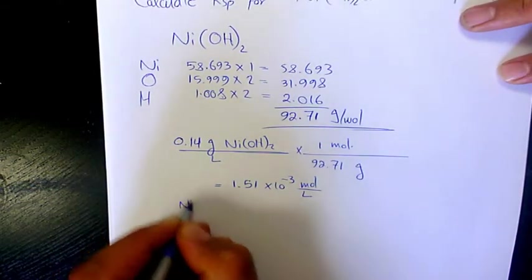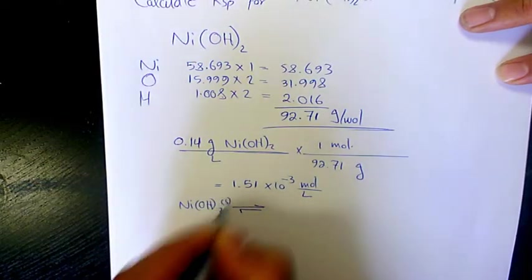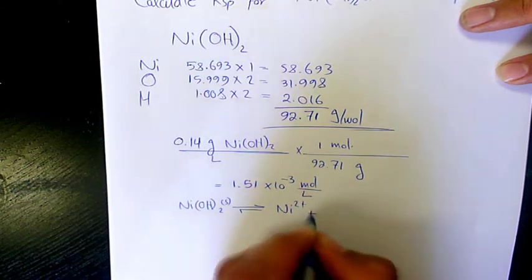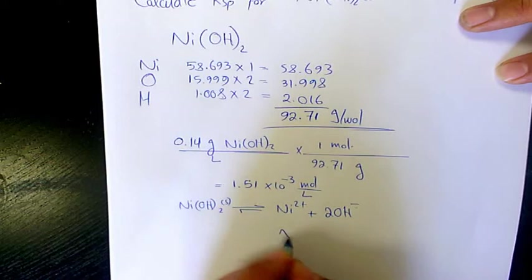So we have Ni(OH)₂ as a solid that dissolves into Ni²⁺ plus 2OH⁻. It's going to produce x for nickel and 2x for hydroxide.